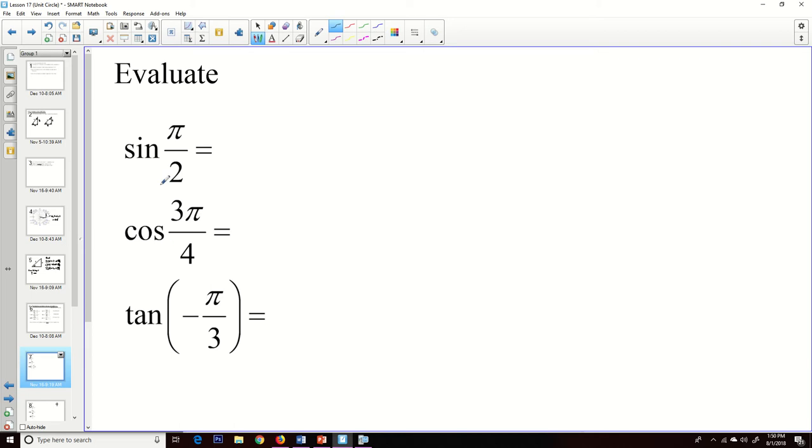Now, sine and cosine are going to be very easy, because they're just y and x. Tangent is the ratio of y to x, so we may have to do a little bit of extra work, but it's still going to be fairly simple.